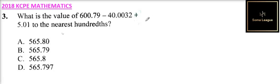Question number 3, what is the value of 600.79 minus 40.03032 plus 5.01 to the nearest hundredth?